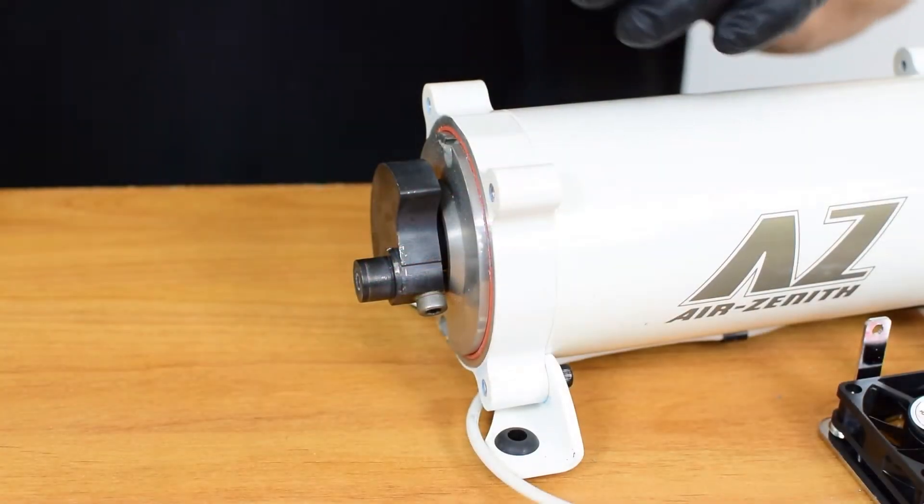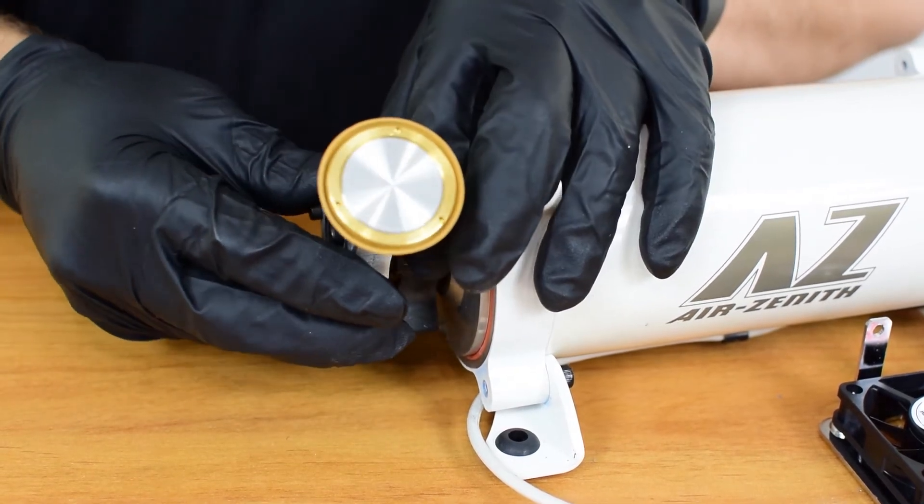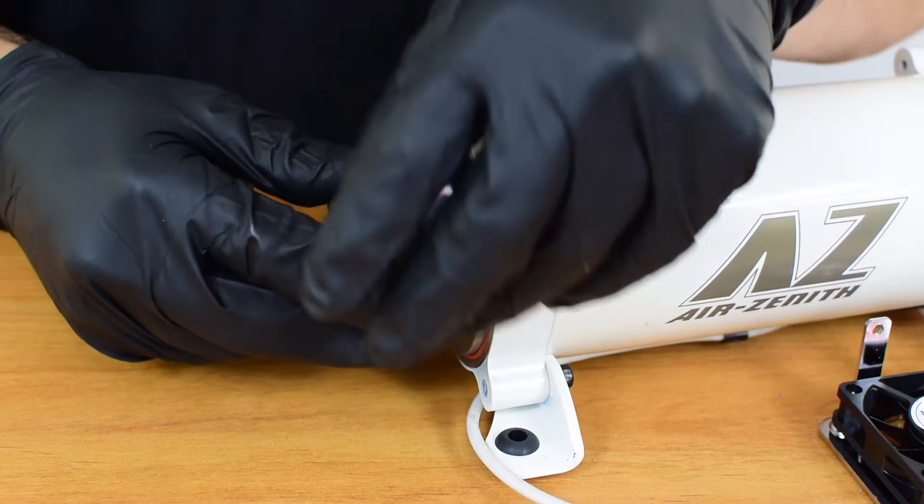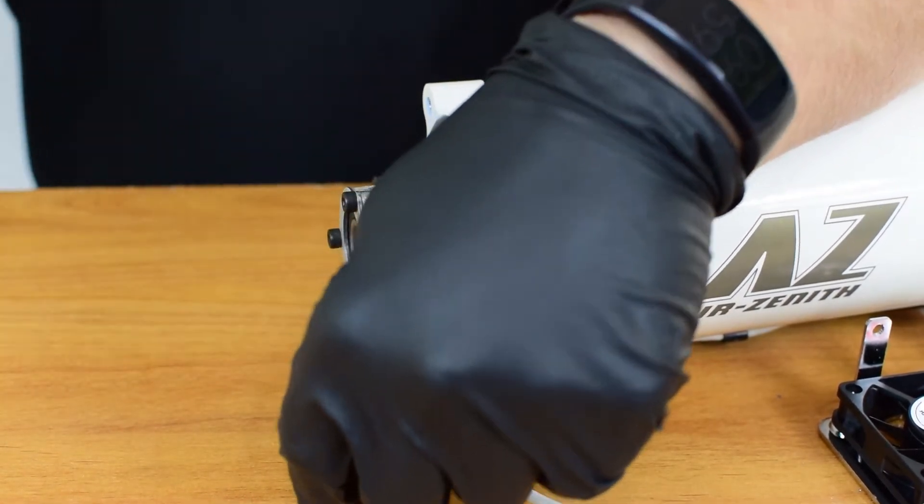You're going to grab the new piston assembly from the rebuild kit. Make sure the surface is clean of any material and slide it on. It should slide on fairly easily. If not you could tap it with the butt end of your allen wrench.